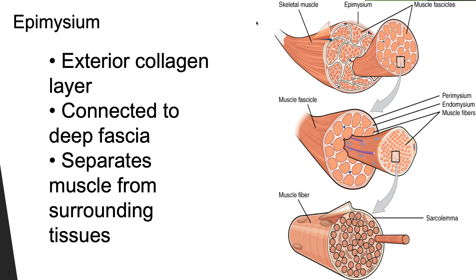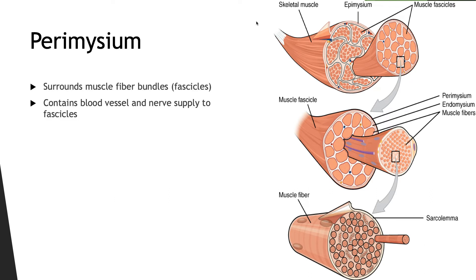Looking at the three connective tissue layers: the epimysium is a dense layer of collagen fiber that surrounds the entire muscle, separating it from surrounding tissues and organs. It's connected to the deep fascia, which is a dense connective tissue layer. The perimysium is a fibrous layer that divides the skeletal muscle into a series of bundles called fascicles. In addition to possessing collagen and elastic fibers, the perimysium contains blood vessels and nerves to help maintain blood flow and innervate the muscle fibers within the fascicle.